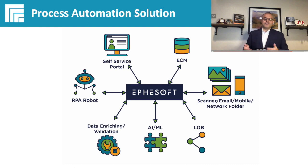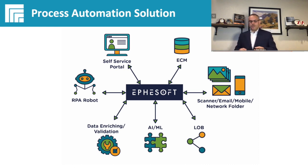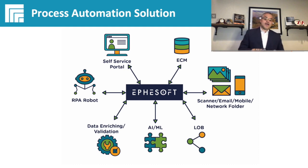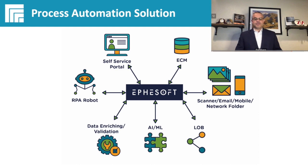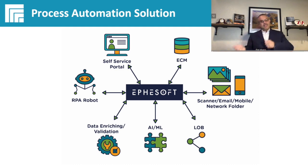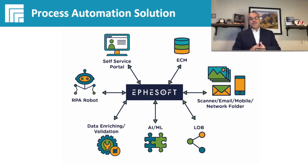Within the self-service portal world, you might be able to give instantaneous feedback. If you have an underwriting self-service portal and somebody's delivering a W-2, you can immediately tell them that's the wrong year of W-2, as opposed to going to an underwriter and having that back-and-forth interaction.